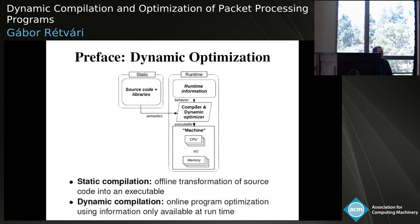Static compilation basically means taking everything available statically — like source code, program libraries, and maybe some offline usage statistics — and transforming this into an actual executable that is then fixed for the lifetime of the program. In contrast, dynamic compilation is a technique that allows us to exploit information available only during runtime to improve the performance of the program.